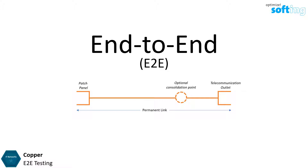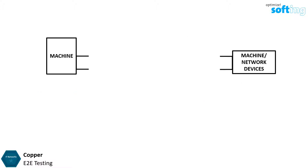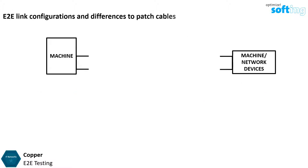A channel is the complete horizontal cabling path including the permanent link, and any cross-connects and/or patch cords attached to both sides of the link. In an industrial environment, where machines are directly connected to machines or network devices such as switches without using additional patch cords, an end-to-end link is used for these applications.